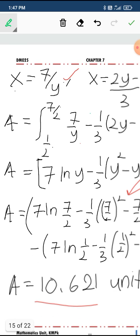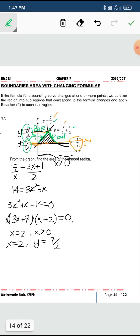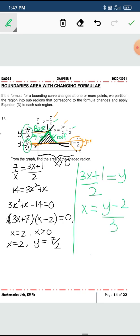As we look here, in this case, we have to change the function to x equals 7 over y. Initially it is given in terms of this. If you want to change, 3x plus 1 over 2 equals y, so your x will be 2y minus 1 over 3.